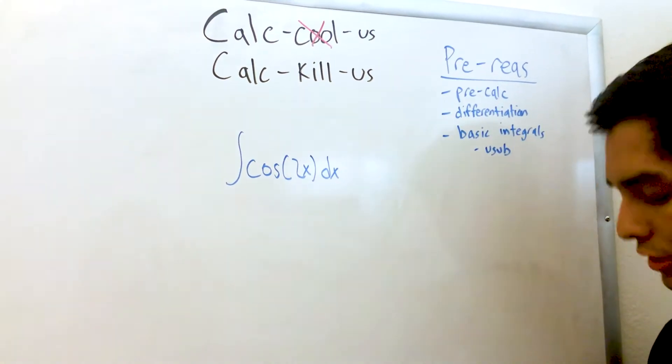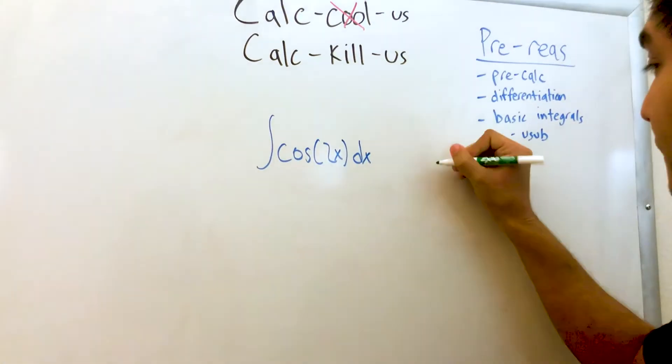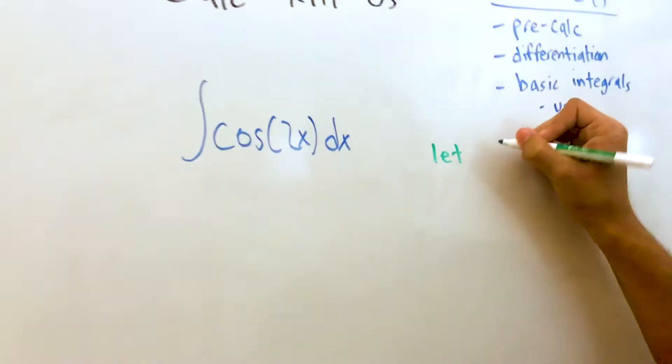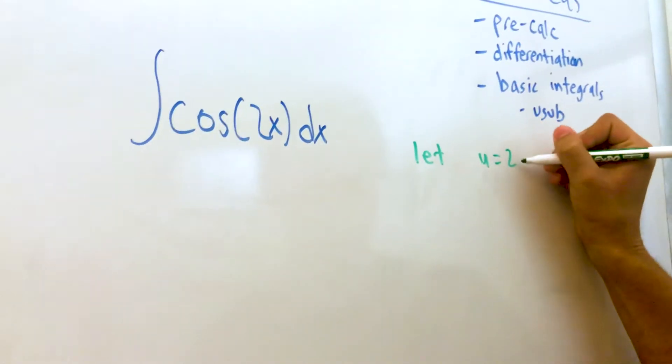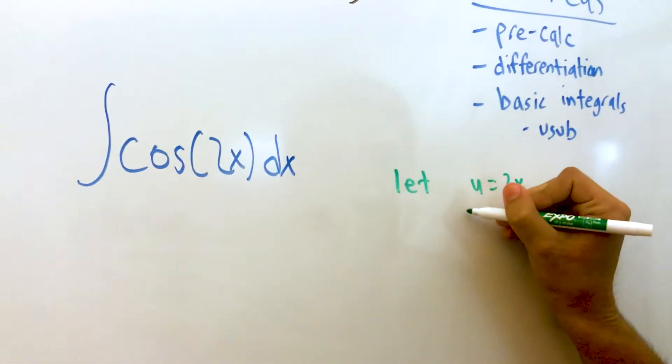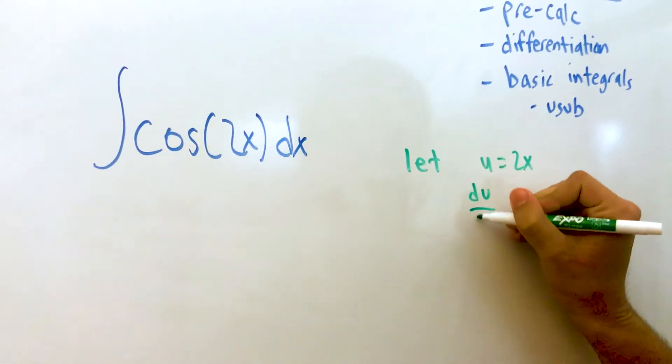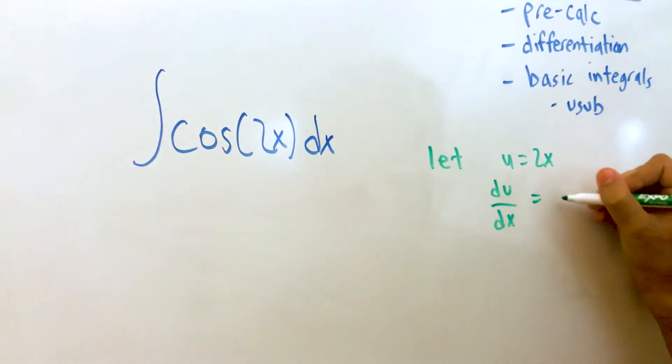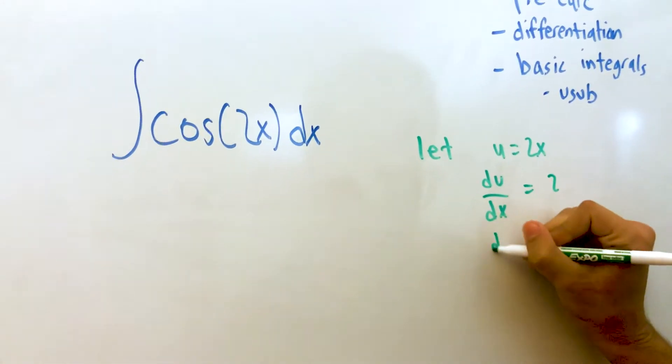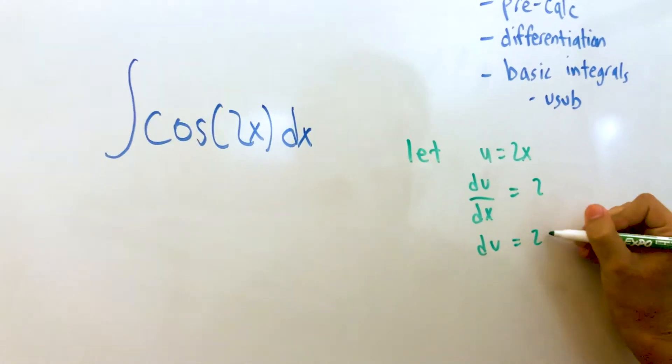All right, so what I'm going to do, I'm going to do a U-sub. Let U equals 2x, such that du dx equals 2, and therefore du equals 2 dx.